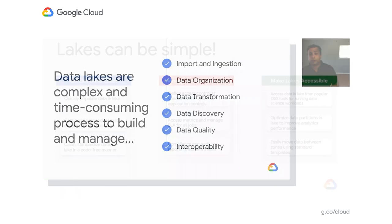Lakes can be simple. There are three primary pillars on which lakes can be built. First, the ability to quickly build the lake by populating data from various sources. Once data is in the lake, you need to catalog and discover it — crawl all the metadata that exists, store it in a central repository, and index it so it's discoverable through search. Metadata can include file format, size, time, and date updated.